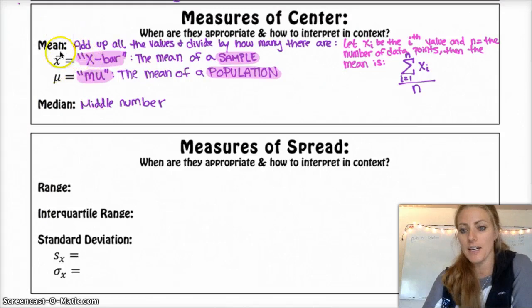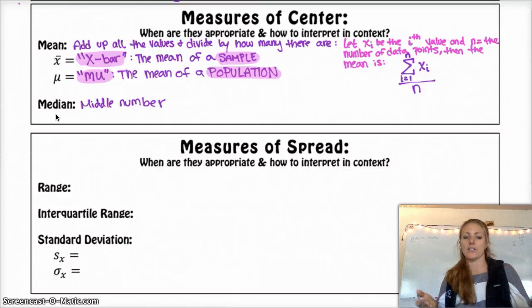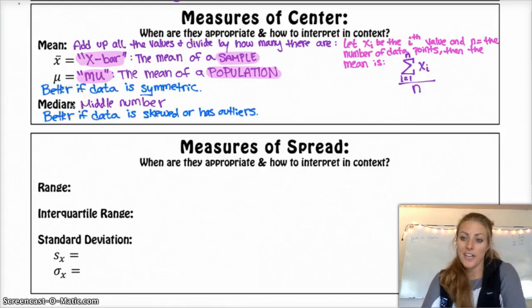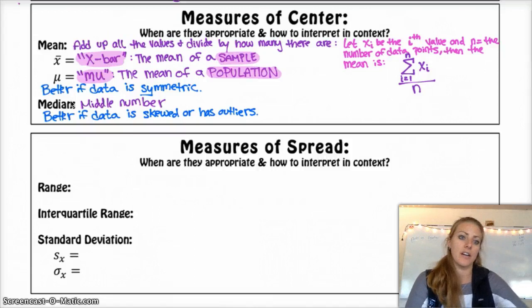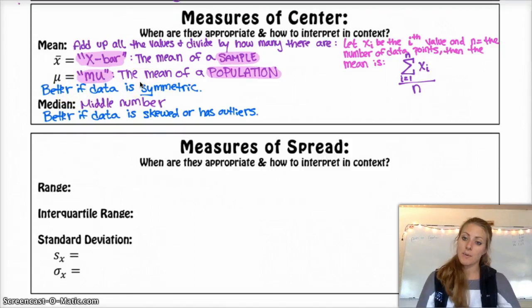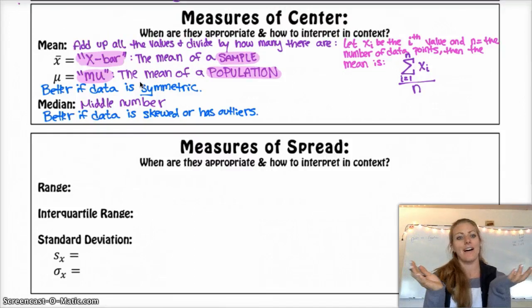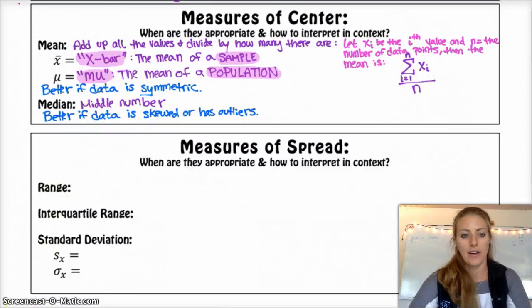Typically, if you have skewed data, extremely skewed data, or extreme values and outliers, you would not want to use the mean because it will be affected by those outliers or those extreme values, and the median will not. We like the mean if our data is symmetric because it encompasses more. The median is usually better if the data is skewed or has outliers. Additionally, the mean is actually the balancing point of a data set, and the median is where 50% of the data is above and below that value.